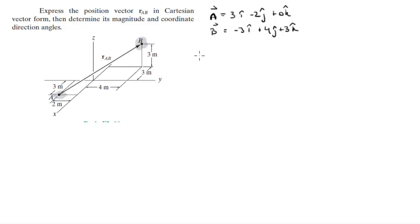Now to find vector AB, you just subtract the values of B minus the values of A. So minus 3 minus 3 is minus 6i, 4 minus minus 2 is plus 6j, and 3 minus 0 is obviously 3k.